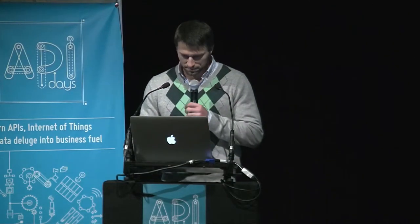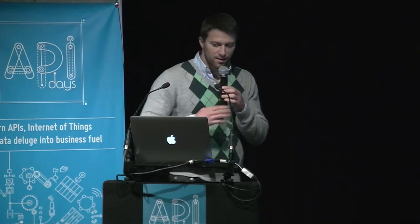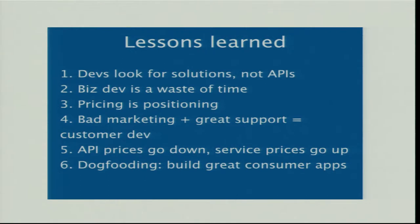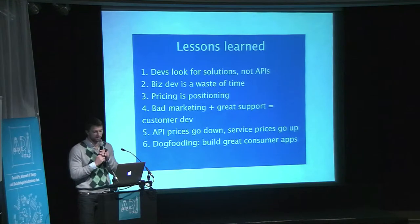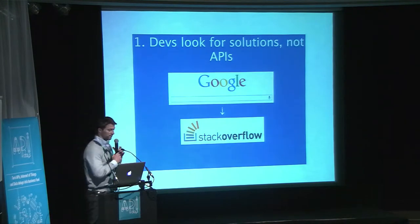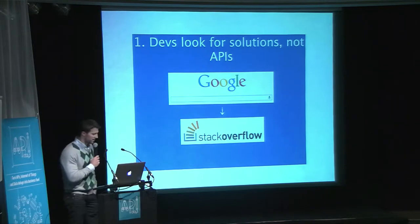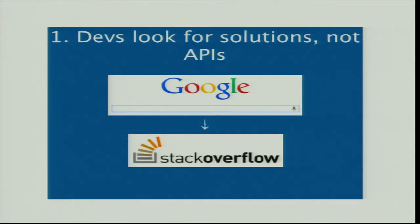So to go back to the API — the API was our first product. Today we have a web application and soon an iPhone application, but the API was really our first product. We are a team of engineers, so we knew nothing about APIs and business and anything like that, so we've learned a few lessons along the way. Six lessons. The first one: developers look for solutions, not APIs. So when developers have a problem, they don't go look into an API directory or Google for an API about X — they usually try to build the thing themselves.